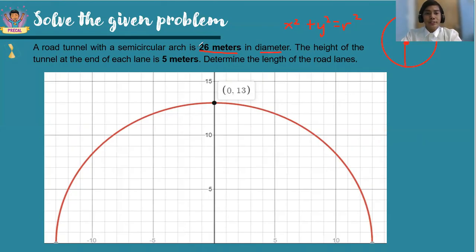The height of the tunnel is given on the problem at the edge of the road, and the length of one of the road lanes is being asked in the problem. So x is equal to, we still do not know, with a given height at the edge of the tunnel, which is y equals 5 meters. On the other side of the tunnel also lies this height because the two road lanes are symmetrical with each other.